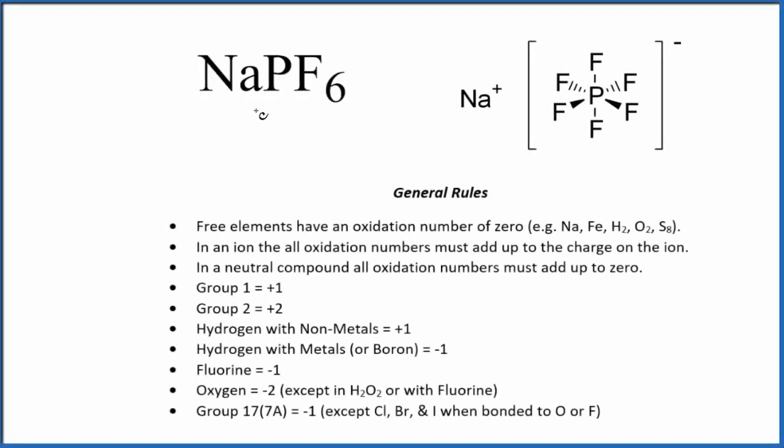Let's find the oxidation states for each element here in NaPF6. There are two ways we can do this. First, we know that this whole thing, this compound here, it doesn't have a positive or a negative outside. So this is a neutral compound. Neutral compounds, all the oxidation numbers, they're going to add up to zero.